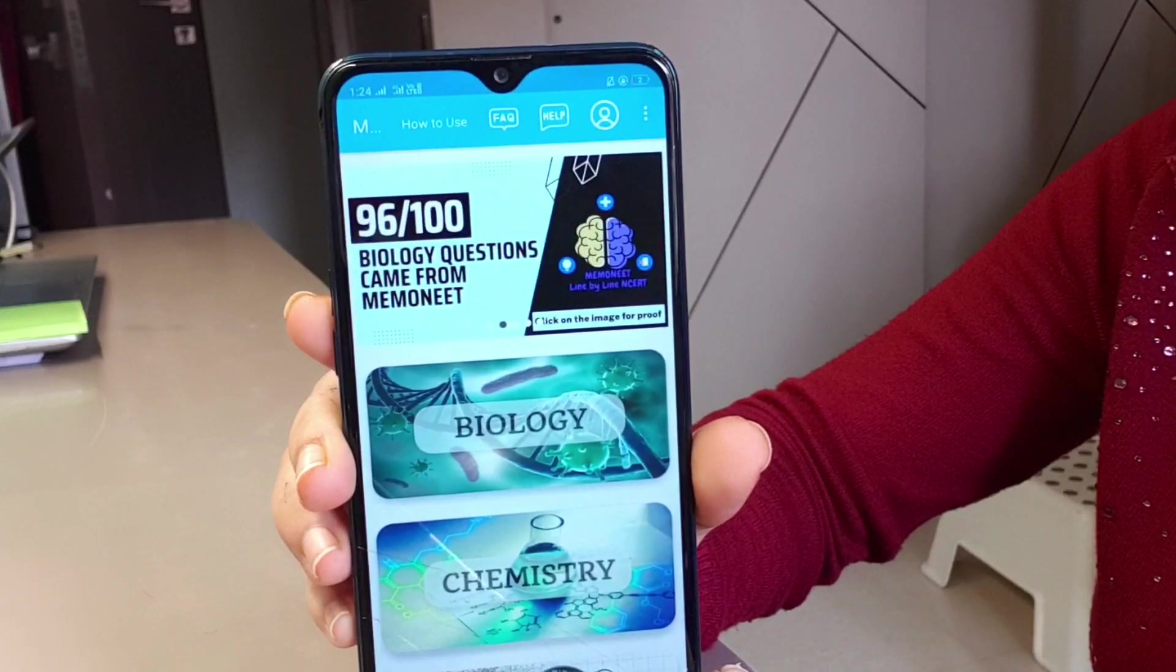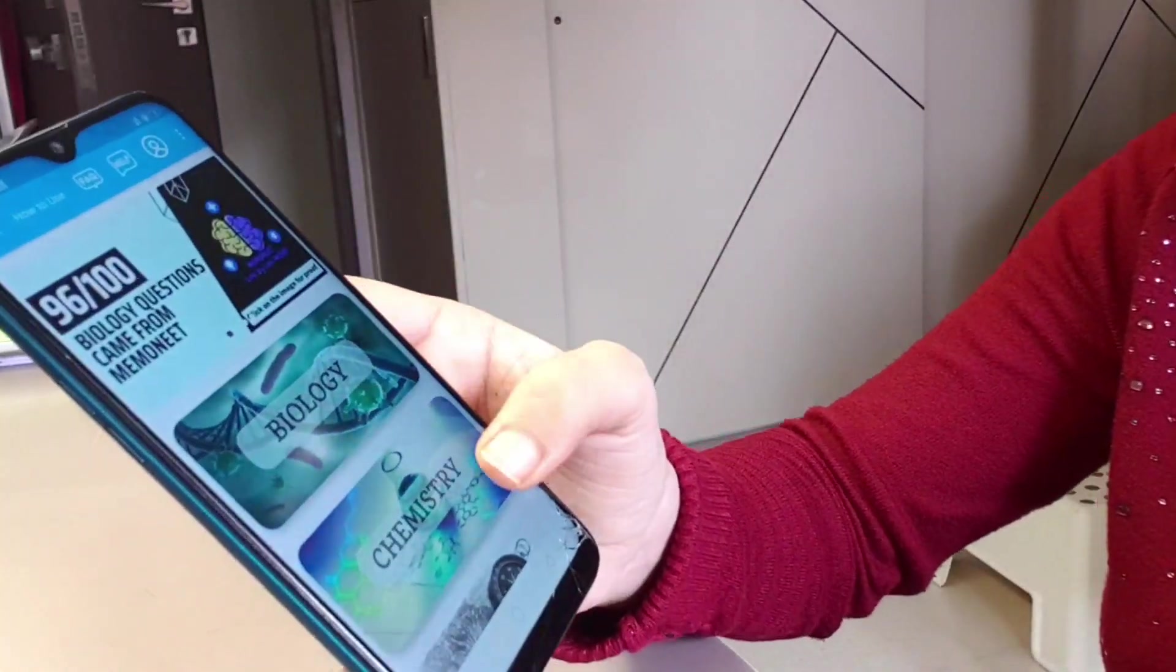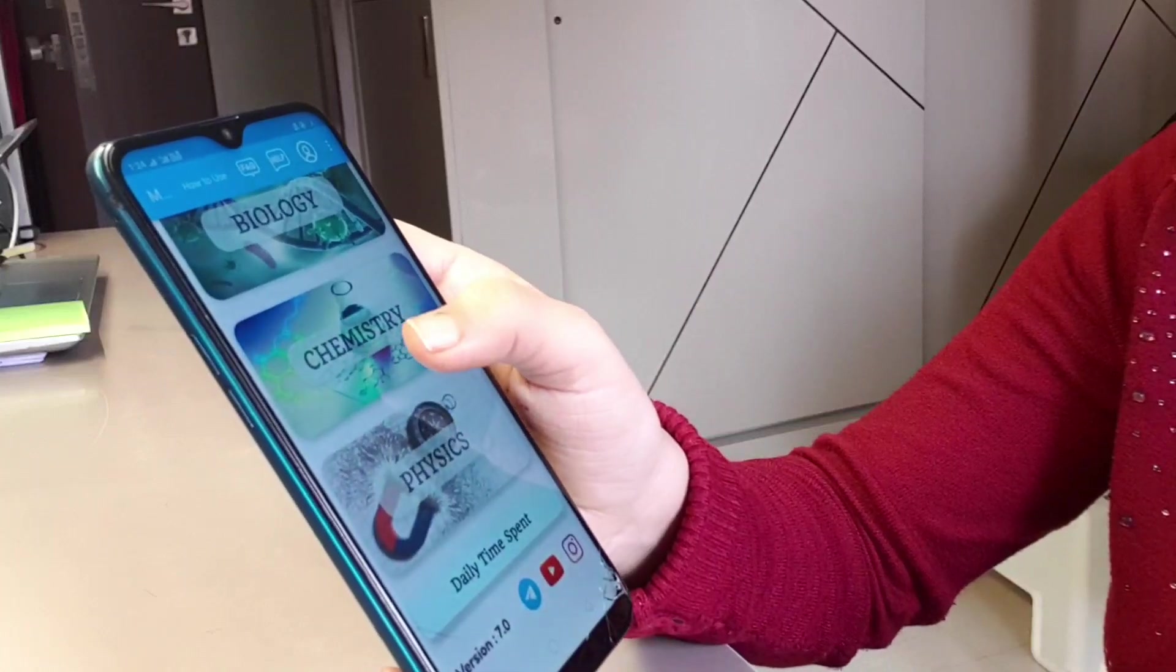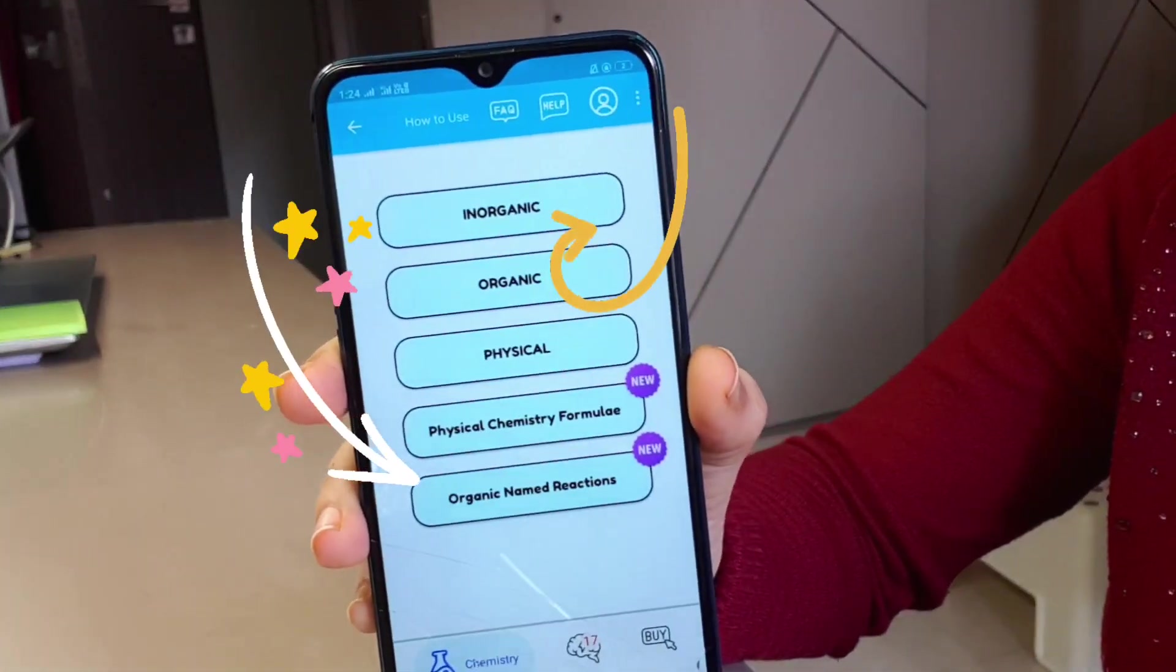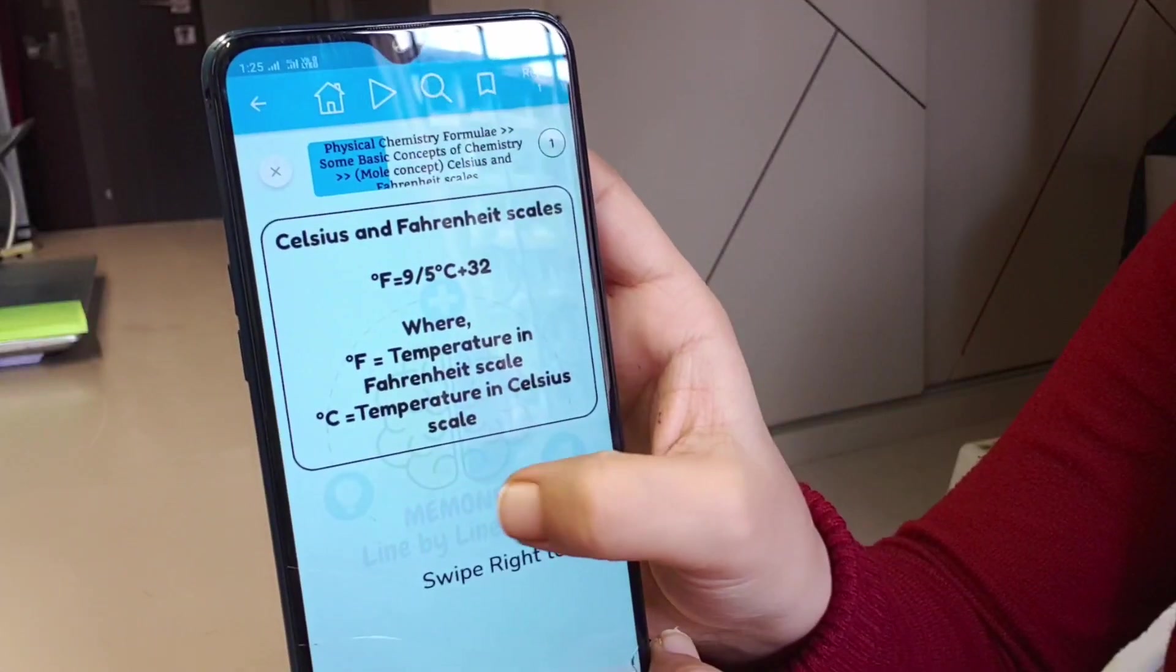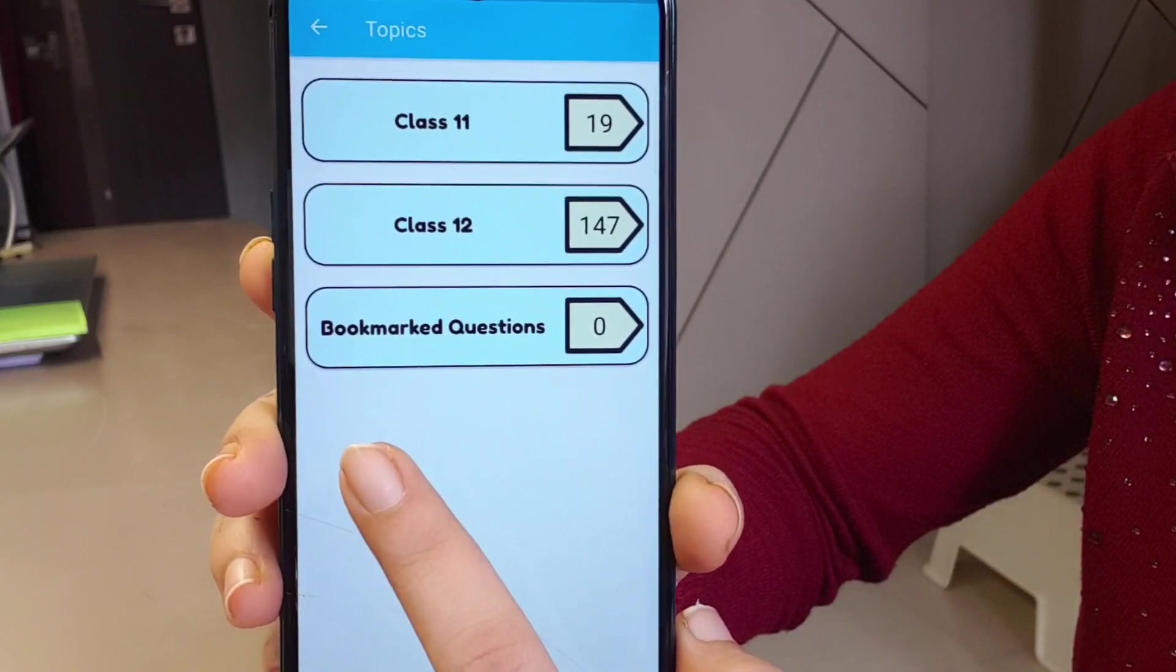Memonit is undoubtedly the best because it has 30,000 questions that come with a special revision algorithm. Not just biology - in chemistry, they have two sections: one for physical chemistry and another for organic name reactions, in a very interesting form.